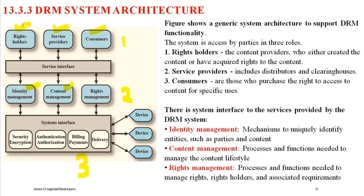The second service in layer two is content management, which deals with managing the real intellectual property content — what type of content is received and handled. The third service is rights management, which defines what types of rights are given to buyers. For example, rights may include reproduction, public presentation, and other types. So three services exist: identity management for authentication, content management for protecting intellectual properties, and rights management for defining consumer rights.